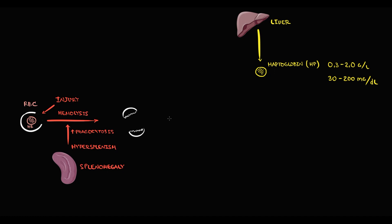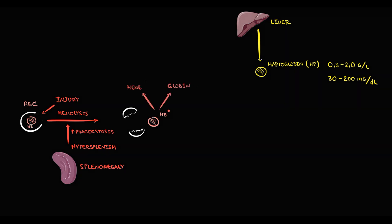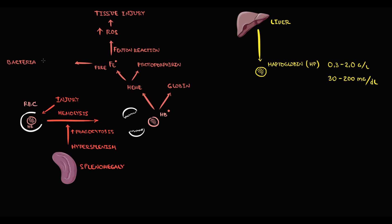With destruction of red blood cells, hemoglobin becomes free, and free hemoglobin in the bloodstream is a very dangerous substance. Hemoglobin consists of heme and globin, and heme is iron in complex with protoporphyrin. Free iron is an extremely dangerous substance. First, free iron can trigger the Fenton reaction with production of massive amounts of reactive oxygen species, which can cause severe damage to tissues. Also, free iron is an essential molecule for bacterial growth — bacteria cannot live without iron — so excessive free iron in the bloodstream can greatly increase the risk of infection.